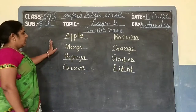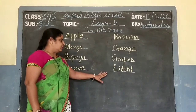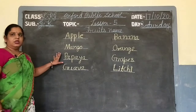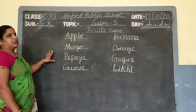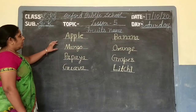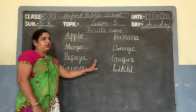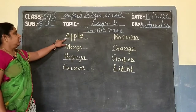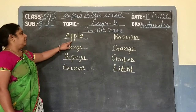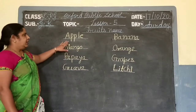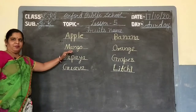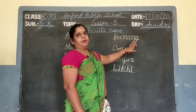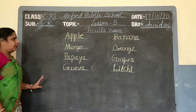अब students, मैंने आपके सामने ये 8 fruits के names और spelling write किये। इसमें आपको ये 8 learn करनी है। सभी बच्चों को proper होनी चाहिए। A-P-P-L-E. Apple. Apple यानी सेव। B-A-N-A-N-A. Banana. Banana यानी केला।